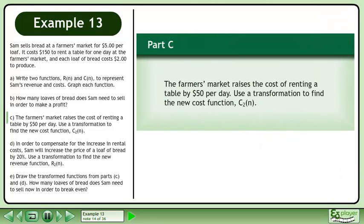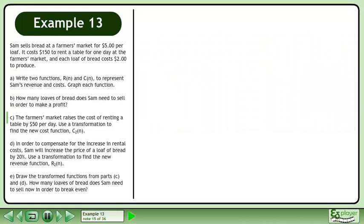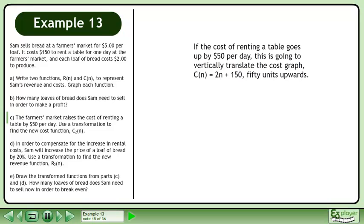In part C, the farmers market raises the cost of renting a table by $50 per day. Use a transformation to find the new cost function, C2. If the cost of renting a table goes up by $50 per day, this is going to vertically translate the cost graph, C of n equals 2n plus 150, 50 units upwards.